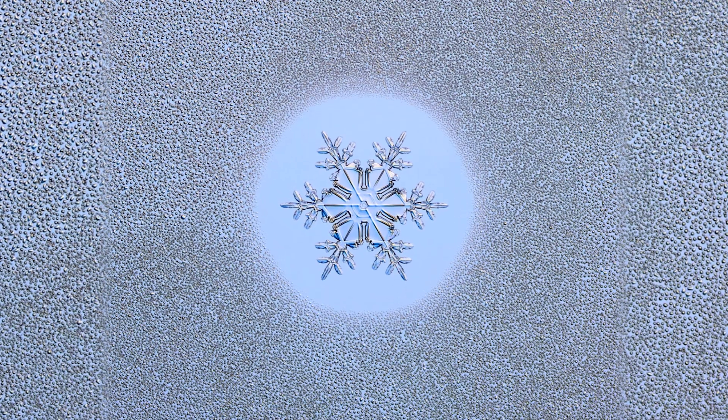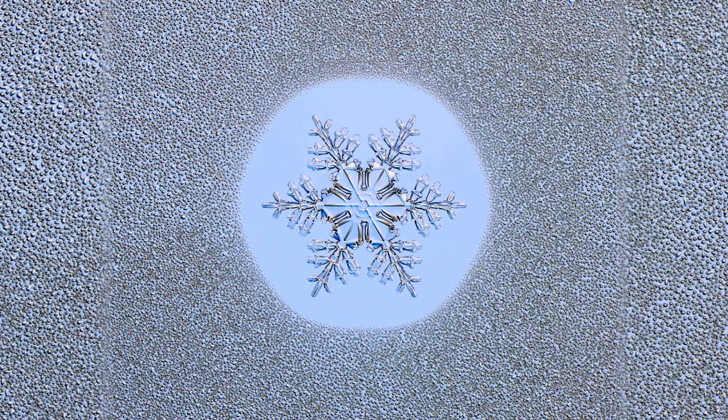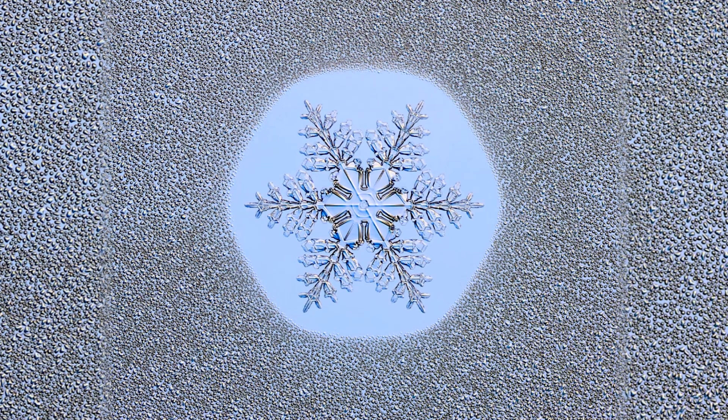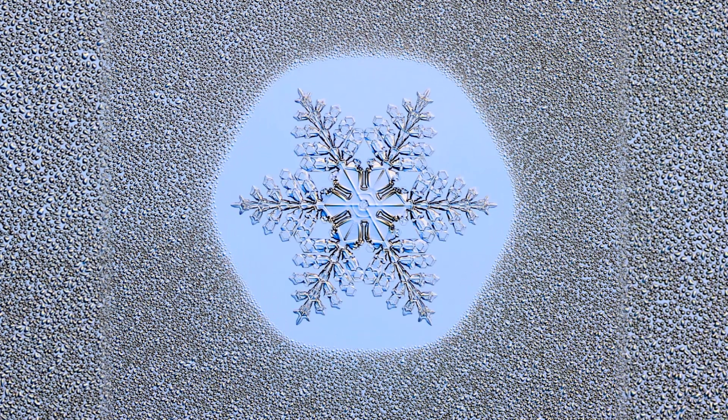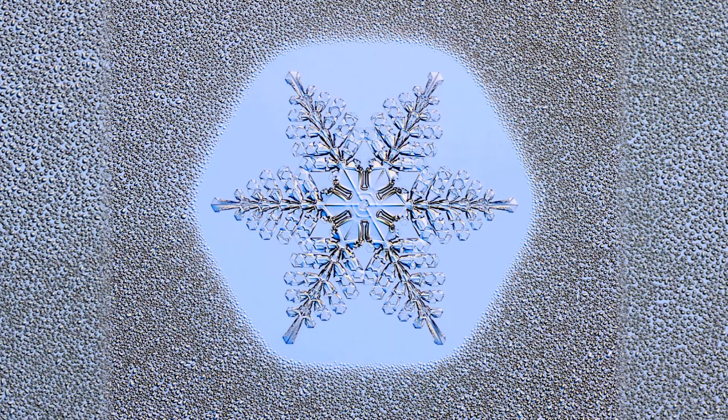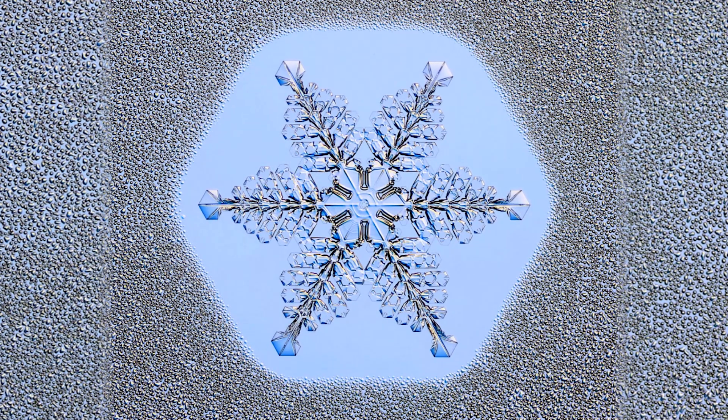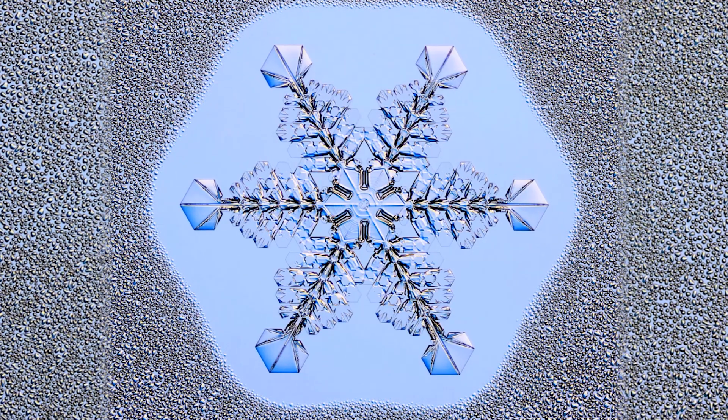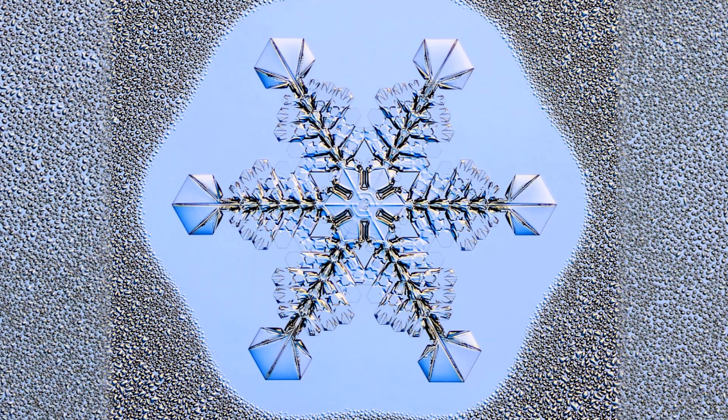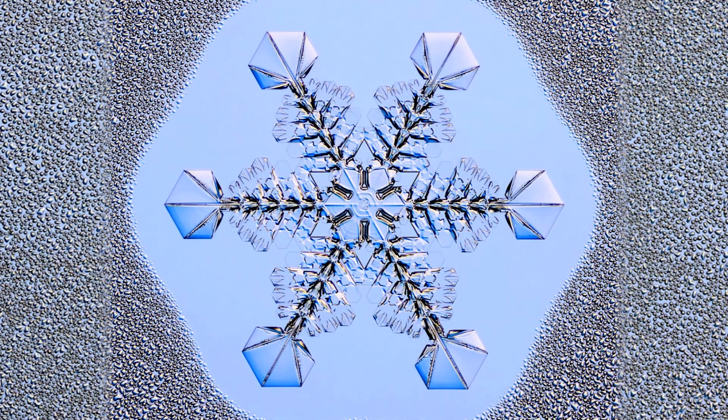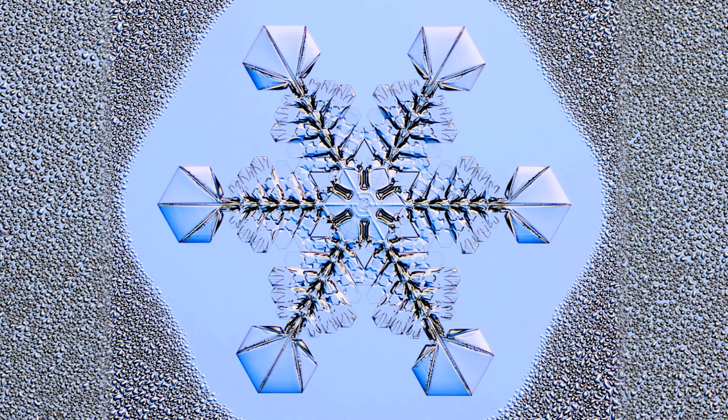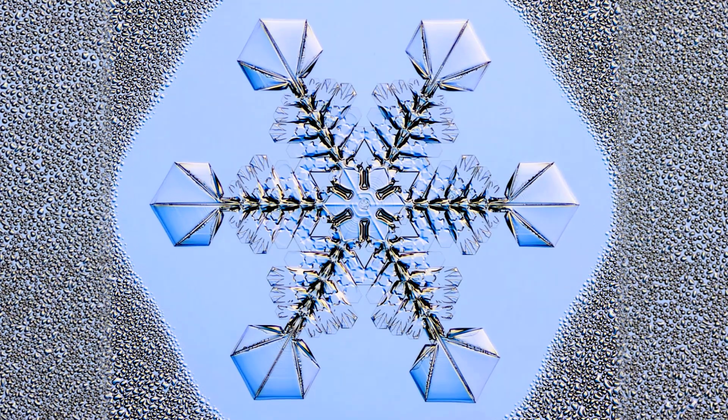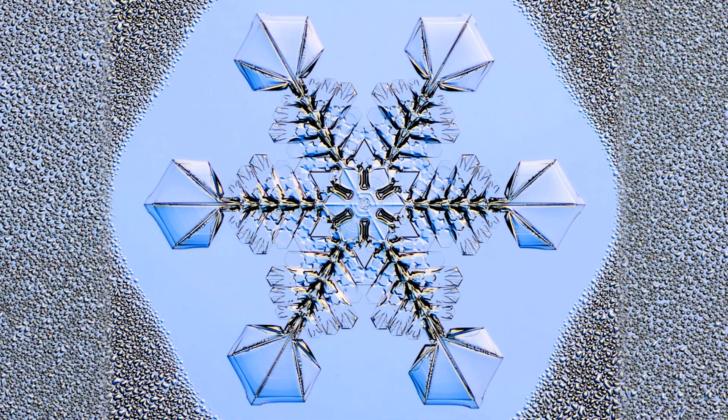Dendrite snowflakes are often larger than other types of snowflakes. The extended branches contribute to their overall size and delicate appearance. Some dendrite snowflakes can grow several millimeters in size, making them more visible and easily distinguishable. Small changes in temperature can result in significant alterations to the branching pattern, leading to the unique and intricate designs seen in dendrite snowflakes.